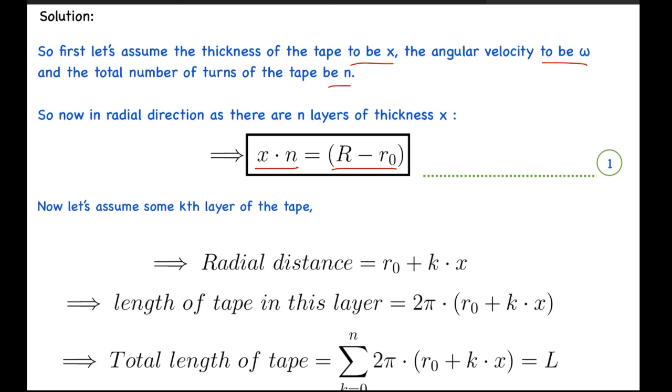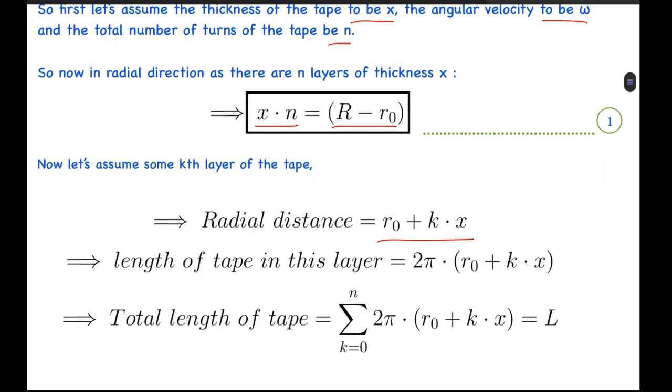Now let's assume some kth layer of the tape. What we can say for this layer is that its radial distance from the center of the spool will be r0 plus k·x, because there will be k layers below it and each has a thickness of x. From here, the length of the tape in this layer will be 2π times the radial distance, the circumference of a circle, so this will be 2π times (r0 + k·x).